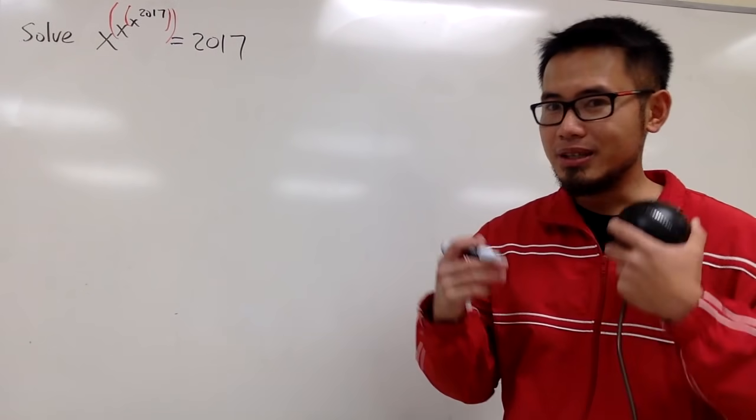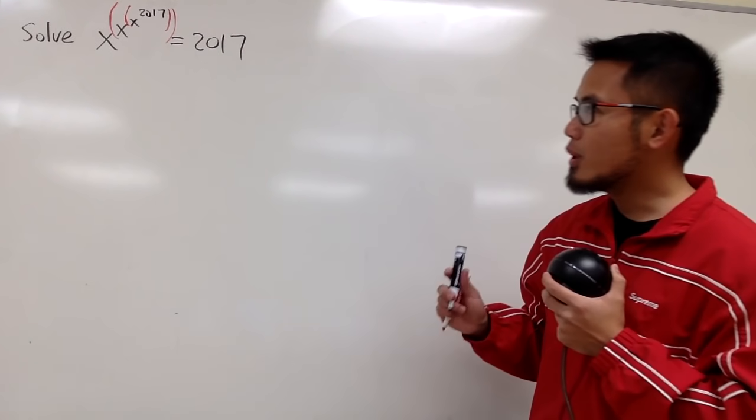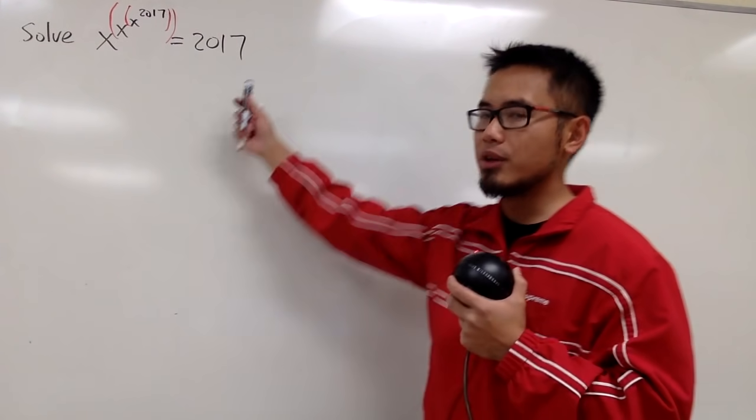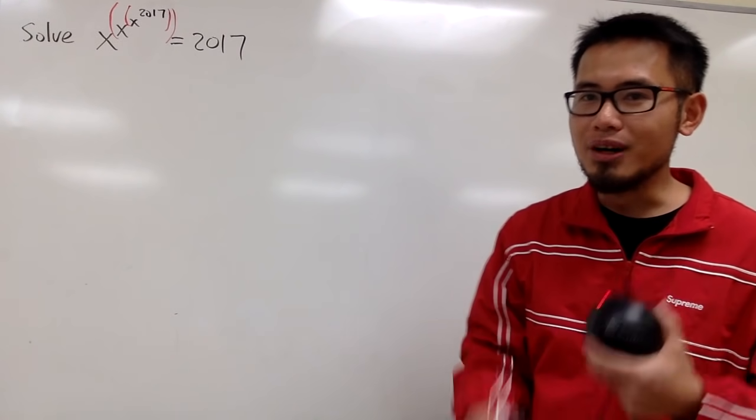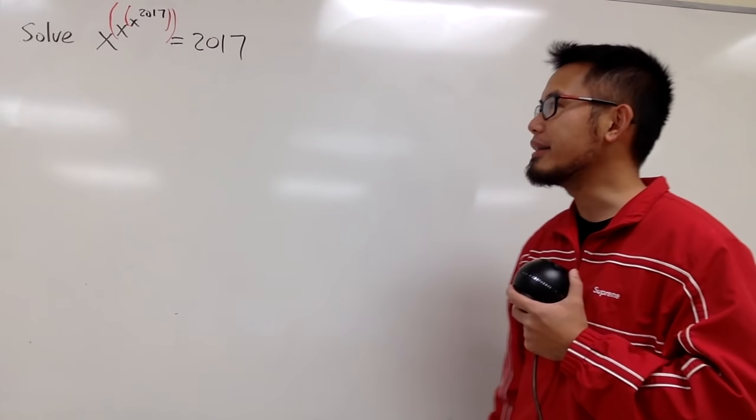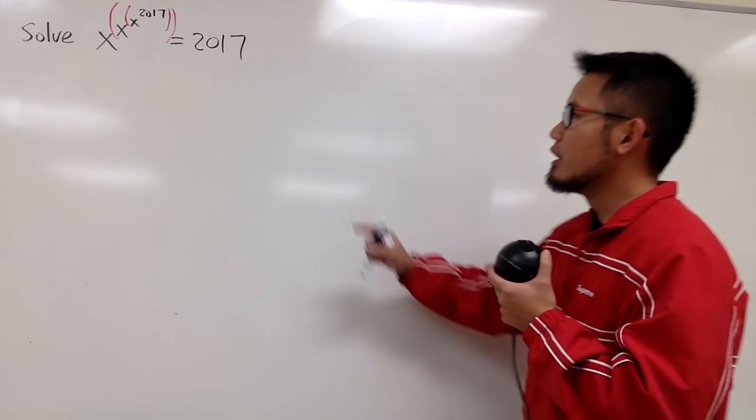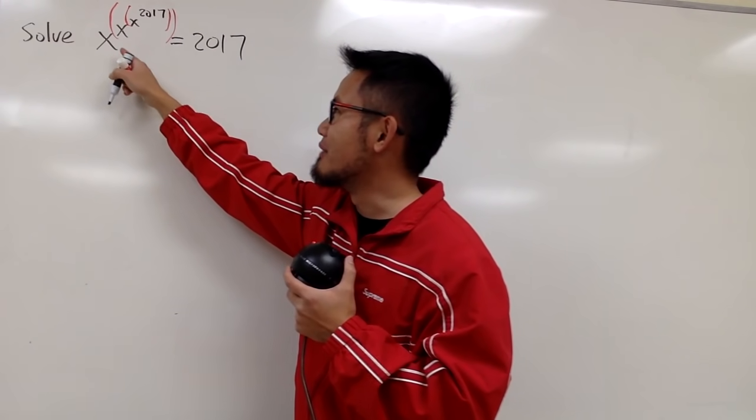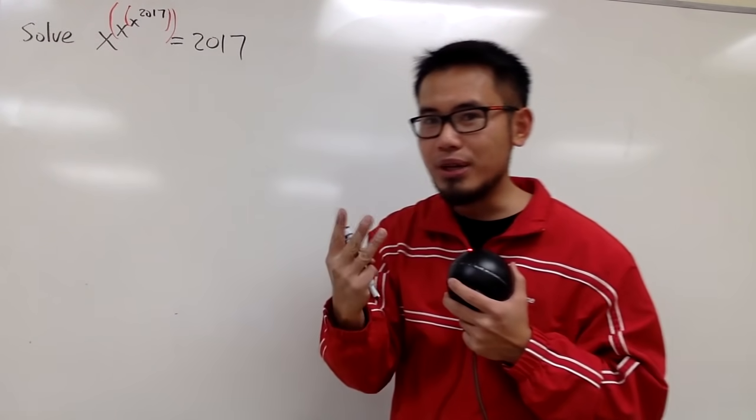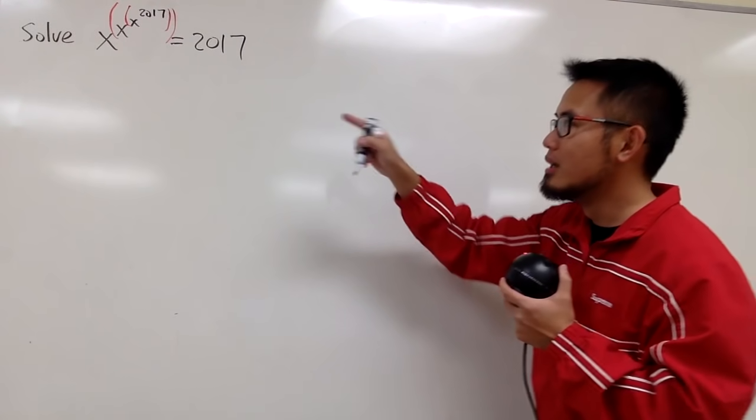Why don't we try to use the general problem-solving strategy? Namely, whenever we're dealing with something new or something that's difficult, try to think about something that's old, something that we've seen before, something that's actually easier. And hopefully there's any kind of connections. So the reason that this is problematic is because we have x to the x to the x, namely three x's for the base, and then raise to the 2017th power.